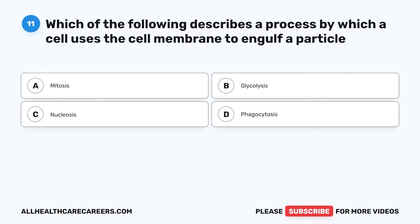Question 11. Which of the following describes a process by which a cell uses the cell membrane to engulf a particle? A. Mitosis. B. Glycolysis. C. Nucleosis. D. Phagocytosis.